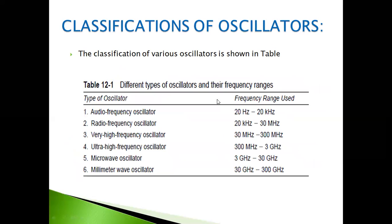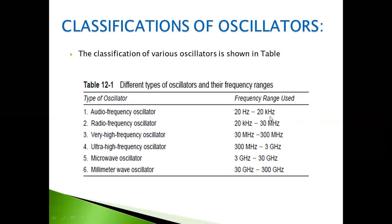Here I've given some frequency range specifications for each oscillator used in practical sessions. These are the standard specifications: audio frequency oscillator (AFO), radio frequency oscillator (RFO), very high frequency oscillator (VHFO), and ultra high frequency oscillator ranging from 300 MHz to 3 GHz — mostly used in microwave engineering. There is also the millimeter wave oscillator, 30 GHz to 300 GHz. Audio frequency and radio frequency oscillators are mostly used in electronic circuit analysis, electronic devices and circuits, and network analysis laboratories. For some cases we go for very high frequency oscillators.